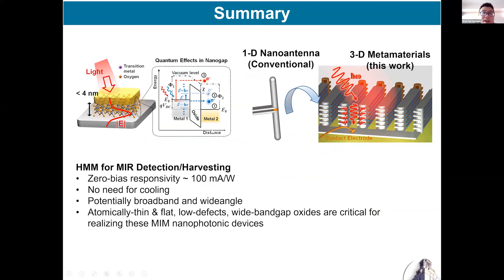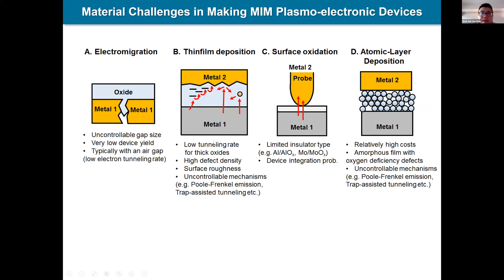In summary, we studied the photon-assisted tunneling and the slow-light rainbow-trapping effect in the content-plasmonic hyperbolic metamaterial, and can obtain a good photo-responsivity of 100 milliamps per watt. Even though we designed the hyperbolic metamaterial and demonstrated it can have higher responsivity for optical photodetection, another material challenge needs to be solved in making MIM devices.